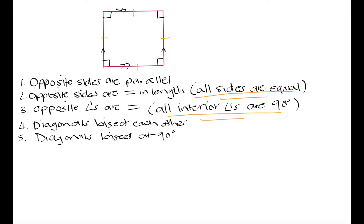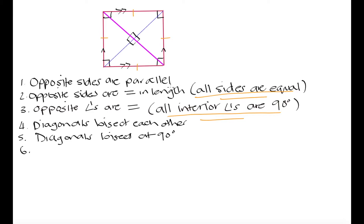Let's put in these diagonals in our square. We know that this is a right angle, this is a right angle, this is a right angle, and this is a right angle — because we proved in our last video that the diagonals of a rhombus bisect at 90 degrees, and we know that will be true for our square as well. We also proved that in a rhombus the diagonals bisect the interior angles, and since a square is just a rhombus with interior angles equaling 90 degrees, that will also apply to the square.